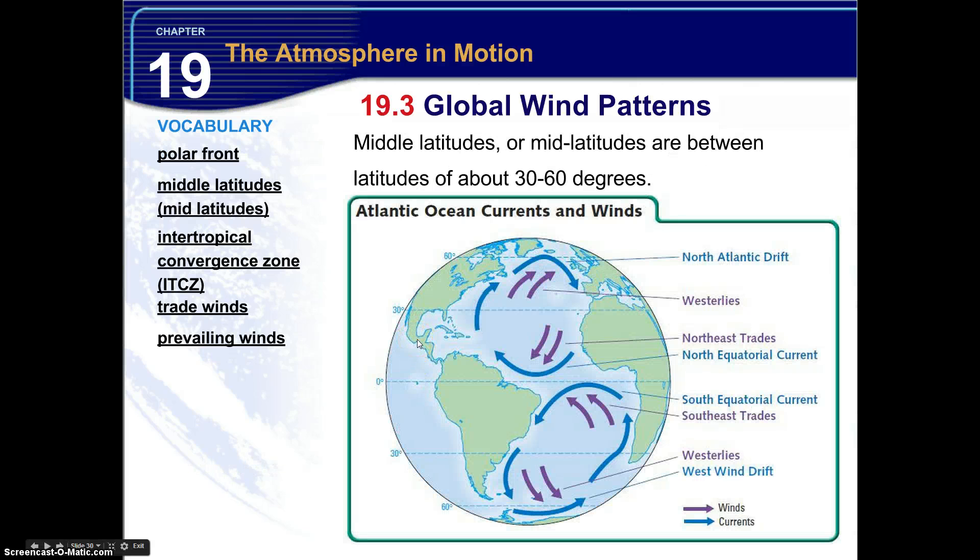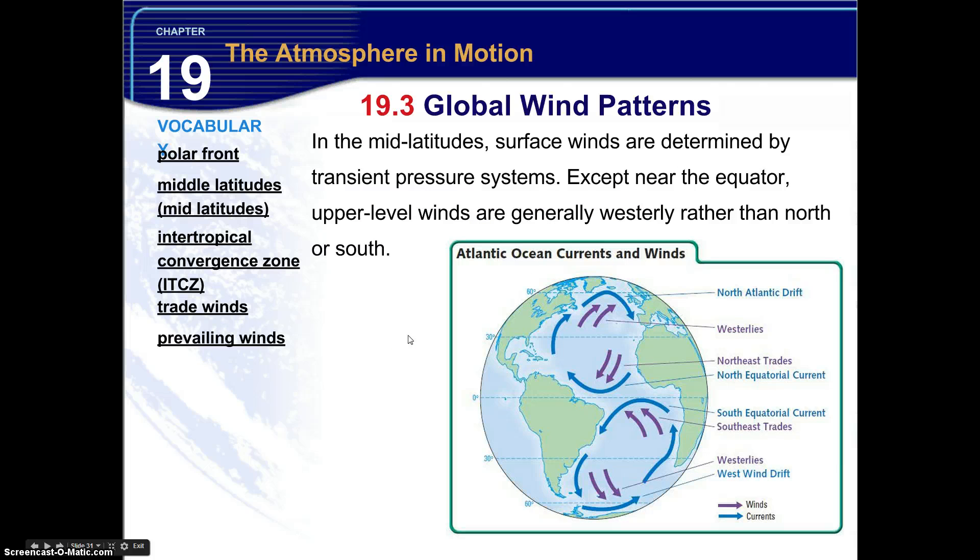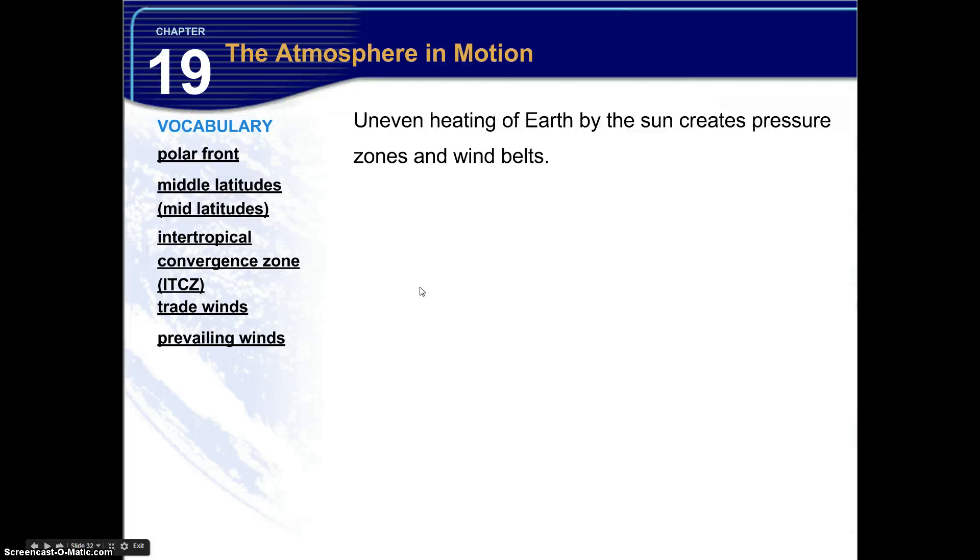Now middle latitudes or mid-latitudes are between latitudes of about 30 and 60 degrees. The Atlantic Ocean currents and winds parallel one another. So we have the north Atlantic drift paralleling the westerlies. The north equatorial current paralleling the northeast trade winds. The south equatorial current, southeast trade winds, westerlies, the west wind drift. So the winds can also drive the currents. Now in the mid-latitudes surface winds are determined by transient pressure systems, the change in air pressure. Except near the equator, where upper level winds are generally westerly rather than north or south. So you see right here, right next to the equator, they're generally westerly at the equator.